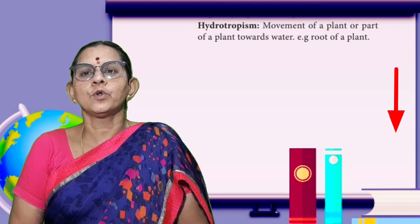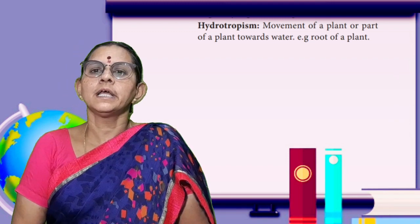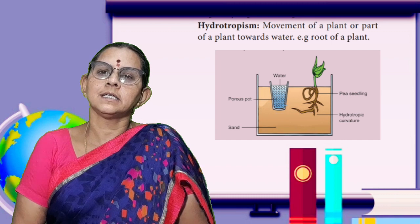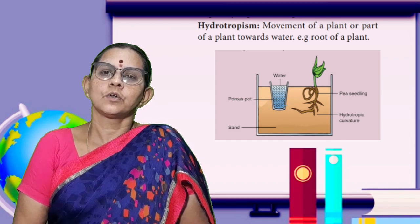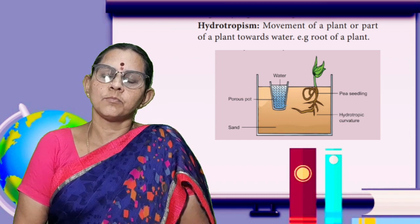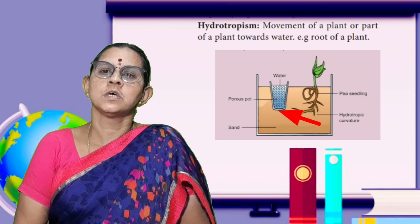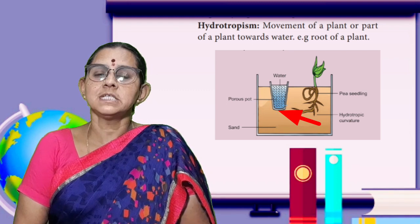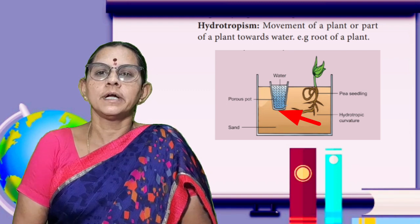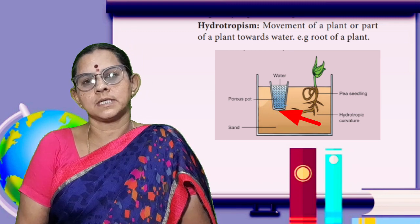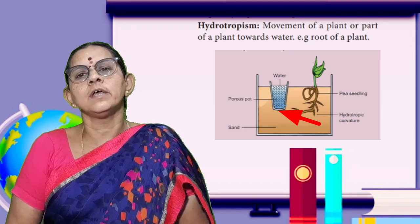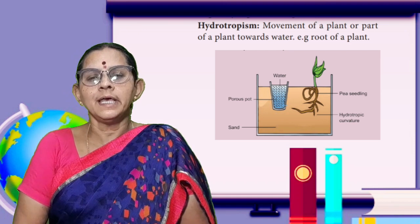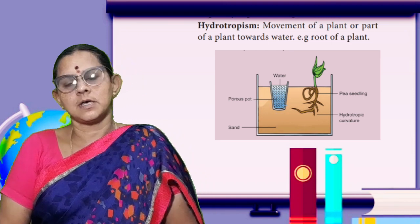Geotropism. Hydro means water. The growth or movement of roots towards water — in search of water — is called hydrotropism.